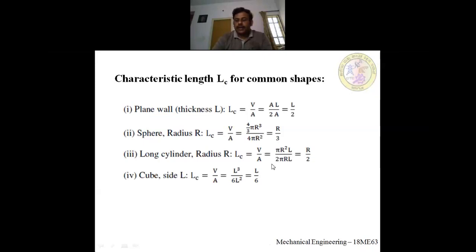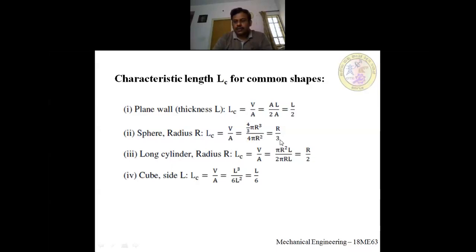The Biot number is given by h·Lc/k, where h is the heat transfer coefficient, Lc is the characteristic length, and k is the thermal conductivity. Lumped parameter analysis is applicable if the Biot number is less than or equal to 0.1.